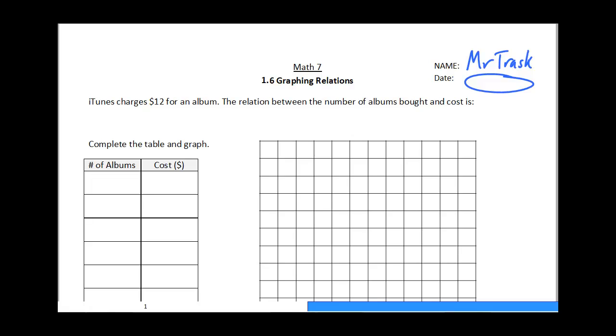Okay, so we've got an example here. iTunes charges $12 for an album. The relation between the number of albums bought and the total cost is as follows: the number of albums, let's call that n, is related to cost, and the cost would be 12 times n.